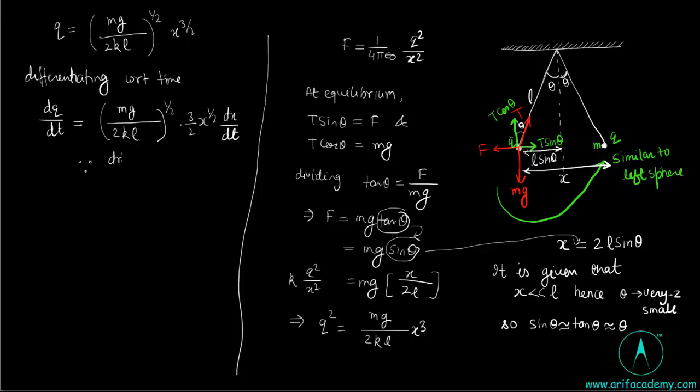dx by dt is equal to velocity of approach equal to A by root x. This is given in the question.